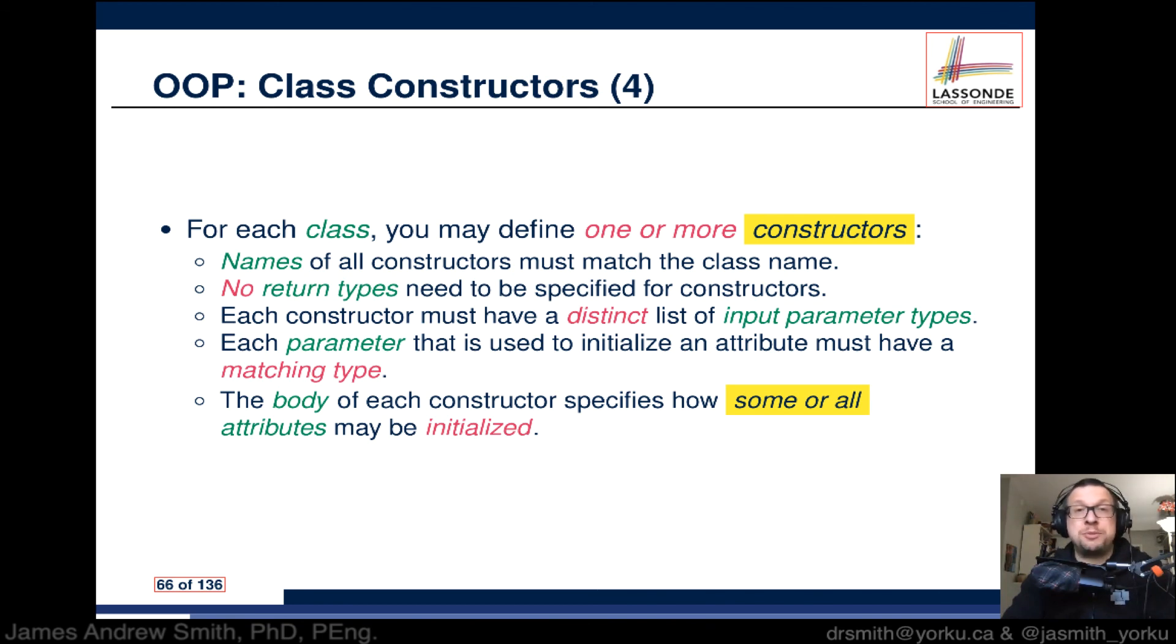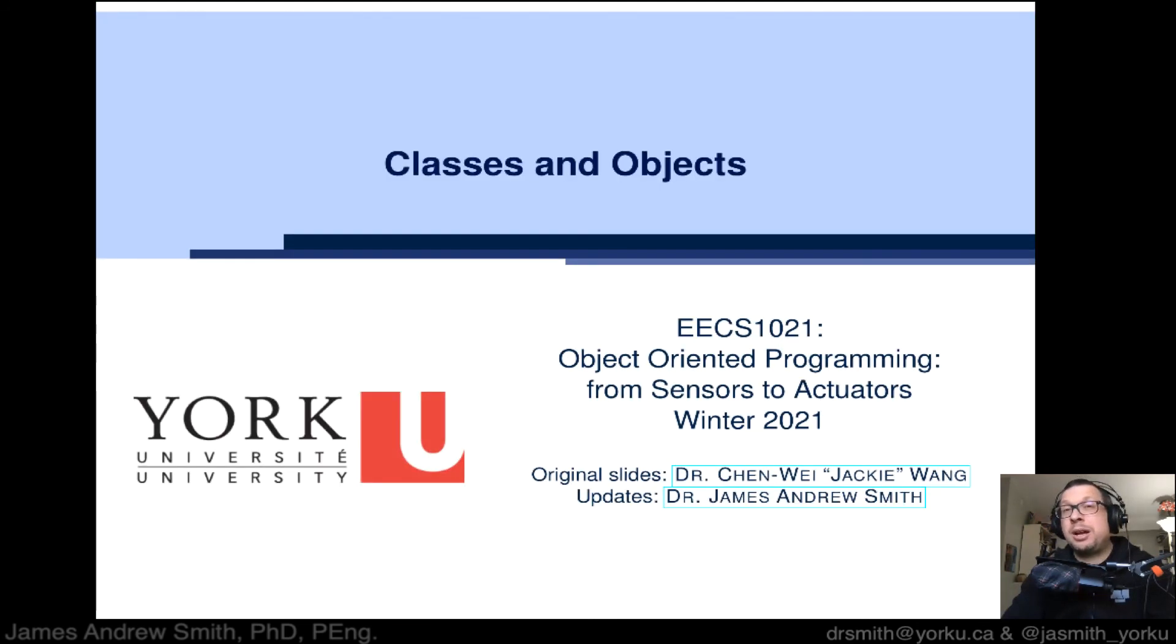The body of each constructor specifies how some or all attributes may be initialized. It doesn't have to be all the attributes, it could be just some of them. And there you go, a little continuation on constructors.